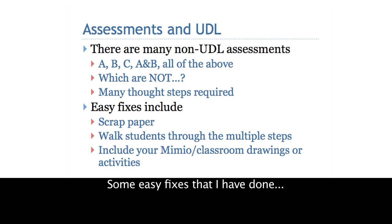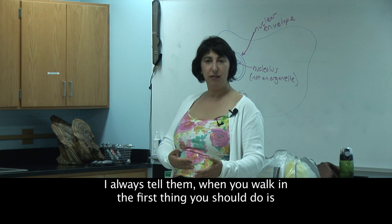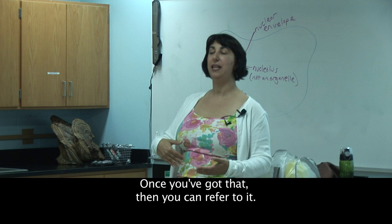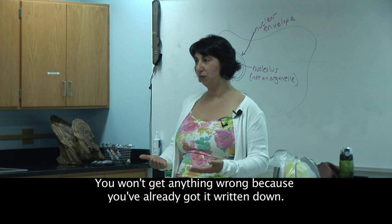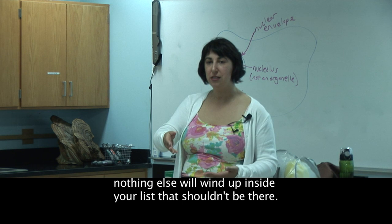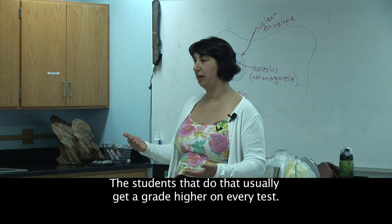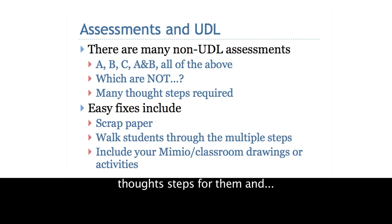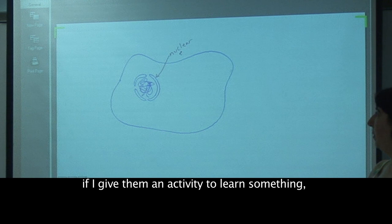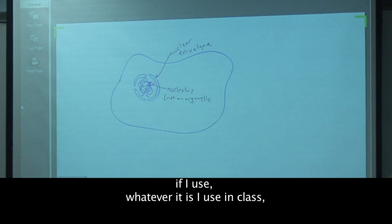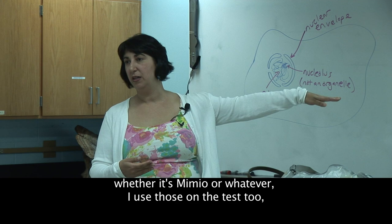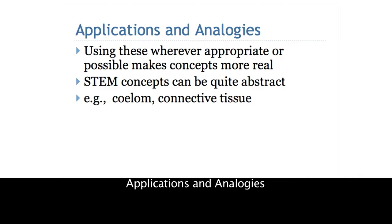Some easy fixes I've done: the first is the scrap paper idea. I always tell students when they walk in, the first thing they should do is write down what they know on a piece of paper. Once you've got that written down, you can refer to it and won't get anything wrong — nothing else will confuse it. Students who do that usually get a grade higher on every test. Other fixes include providing thought steps for them, and if I use something in class — cell models, MIMEO, whatever — I use those on the test too because they have experience with it.